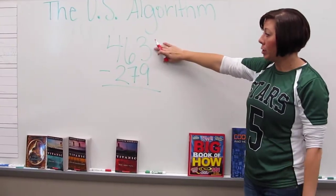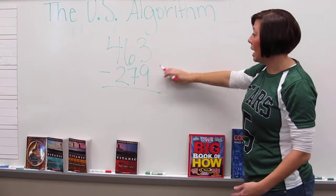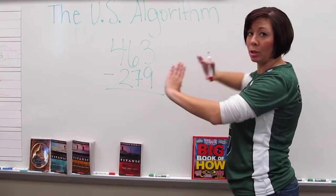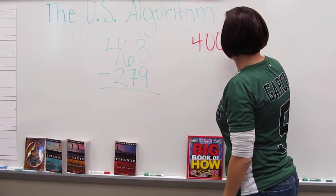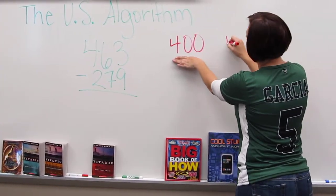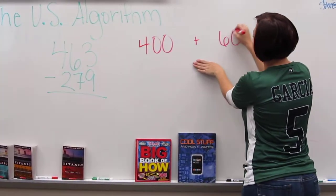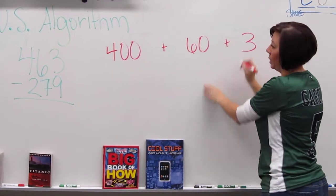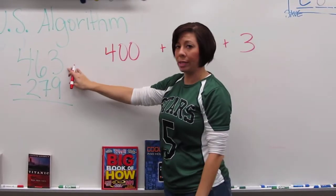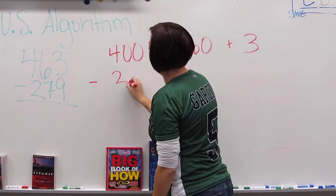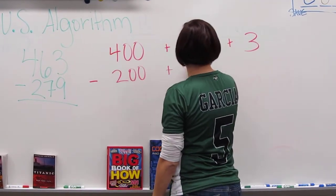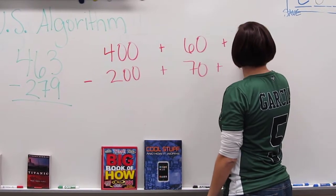We start out with our problem 463 minus 279. What we do with this is we actually break it out and stretch it into its place value places. So I would break it into 400 plus 60 plus 3 to represent 463. Then I subtract and I'm going to break apart 279 into 200 plus 70 plus 9.